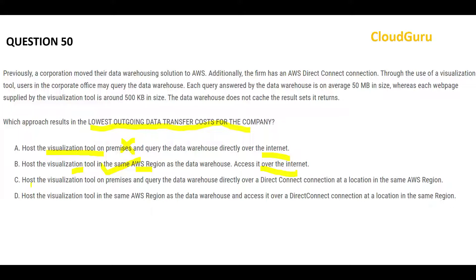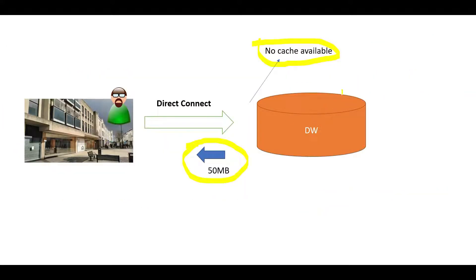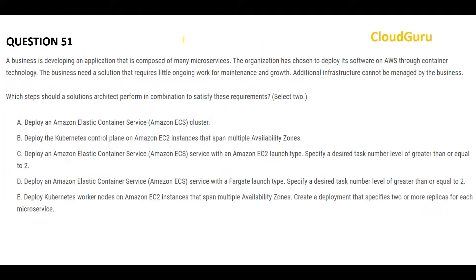Option C suggests putting the Wiz tool on-premises, which is not ideal. Option D says put the Wiz tool in the same AWS region — that's good — and access the data warehouse via a Direct Connect location in the same region, which would be cheaper. The Wiz tool is on AWS and the data warehouse is also on the cloud, so instead of routing through the internet, it uses the internal Direct Connect private connection. This is the final answer.